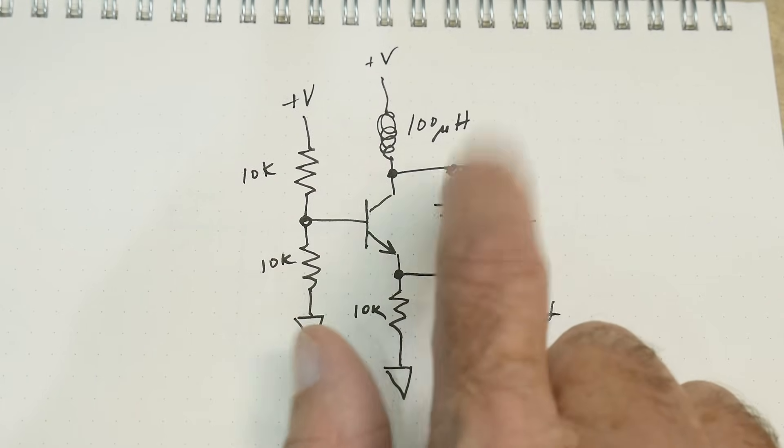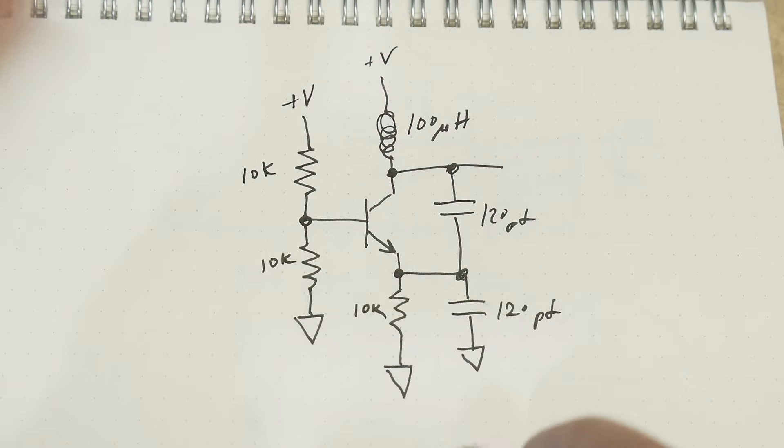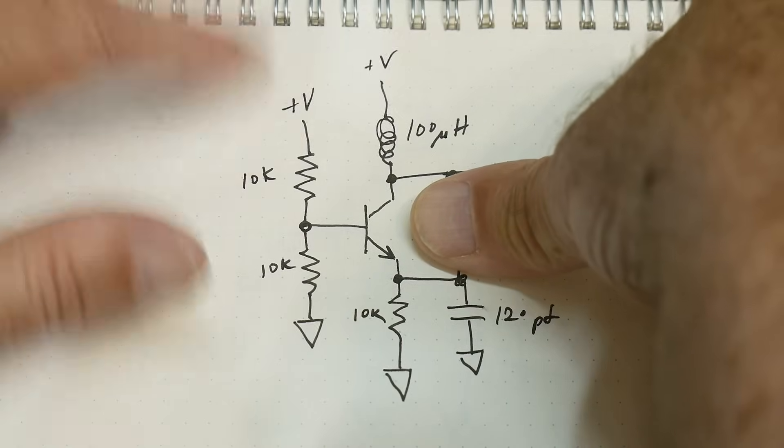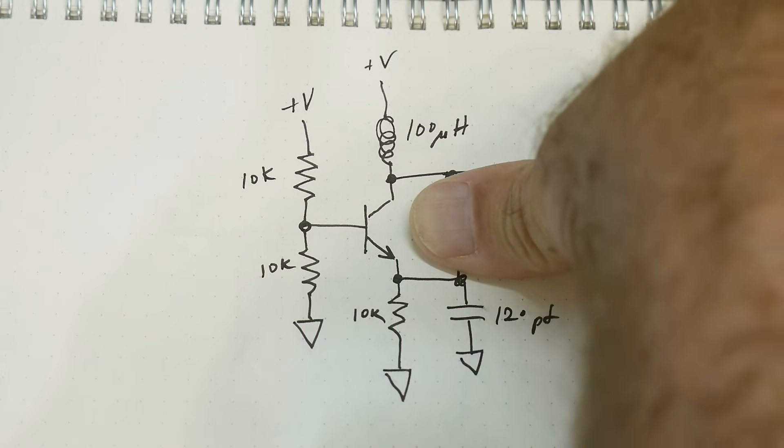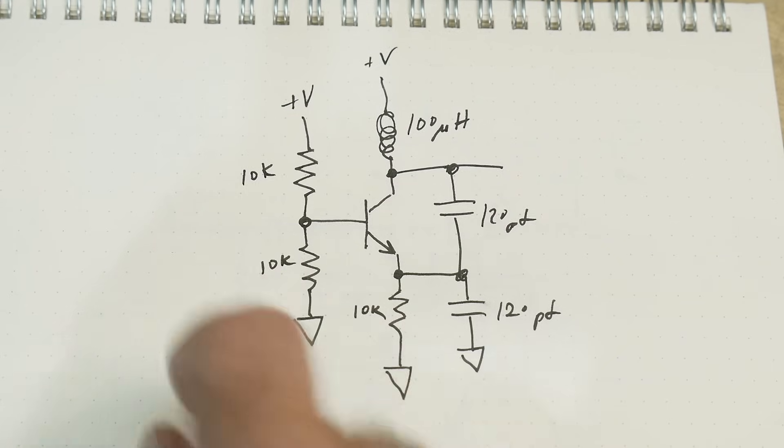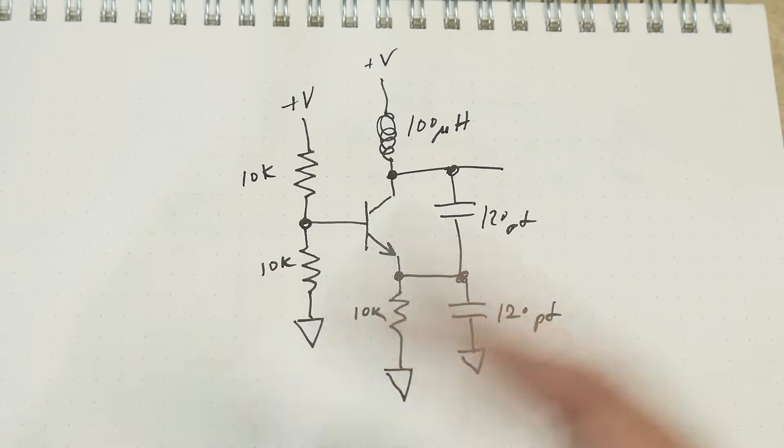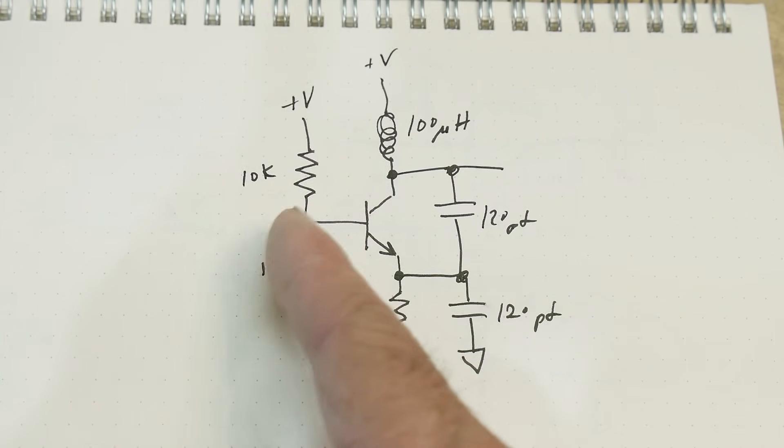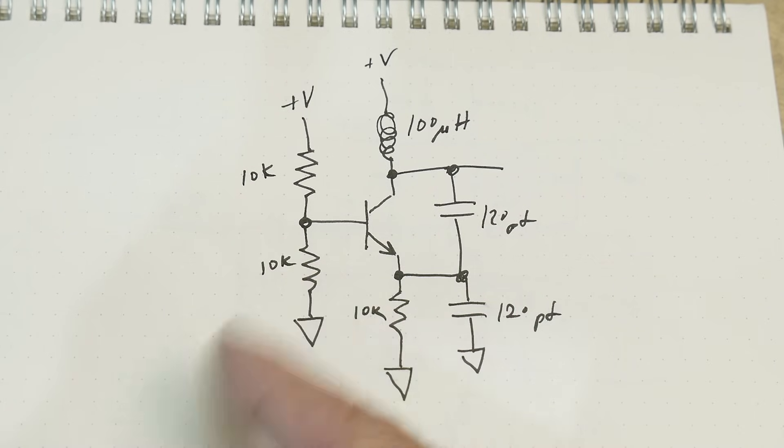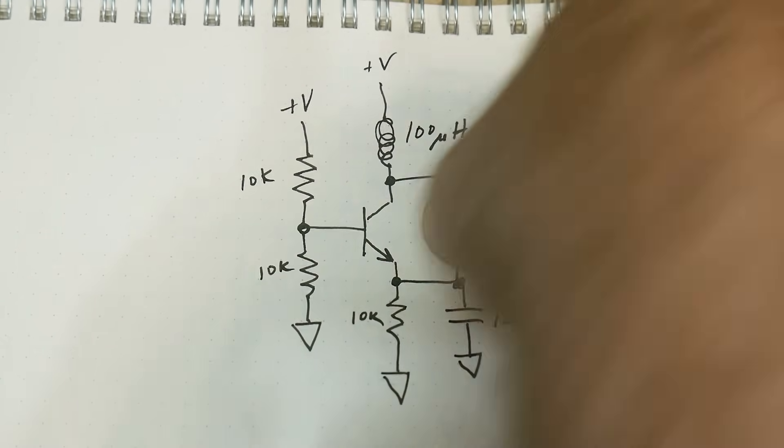You can actually remove this capacitor and it still oscillates. This would be the smallest number of components to do oscillation. Sometimes you'll see a capacitor to ground to keep this at an AC ground. I found that while you can put it in, it still works without it. I'm looking for a very small component count for an oscillator. It seems to work much better with that in there though.